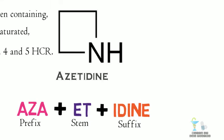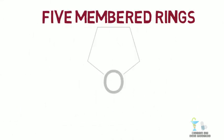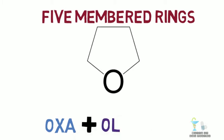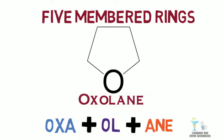Moving on to five-membered rings. OXA for oxygen, OL for five-membered, and ANE for saturation. OXA plus OL plus ANE gives OXOLANE.